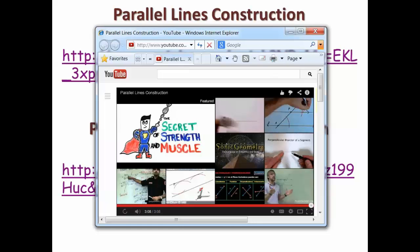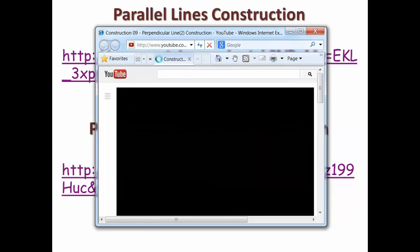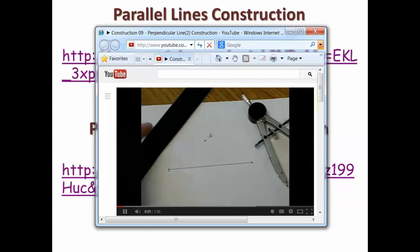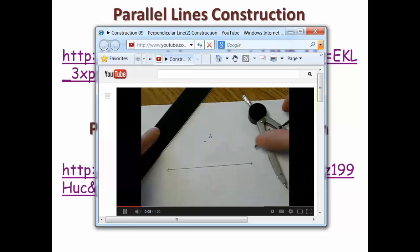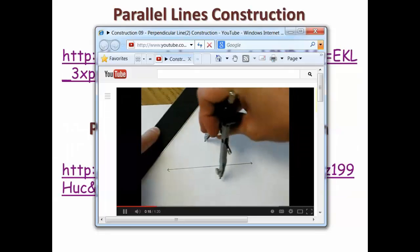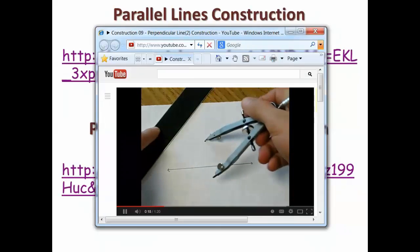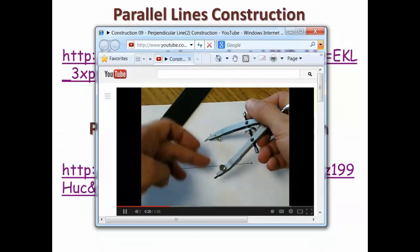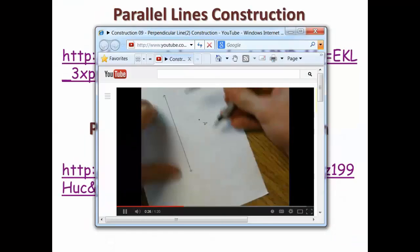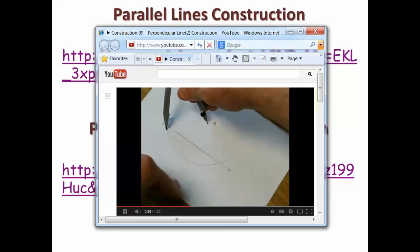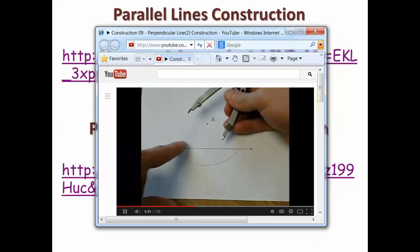Now we're going to see the perpendicular lines construction. In this construction we're going to construct a line perpendicular to a given line but passing through a point that is not on our line. First we need to take our compass and make an arc that passes through our given line twice. The key here is to make sure that your radius is farther than the line itself. So here is our arc and you see it passes through our given line twice.